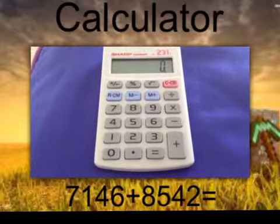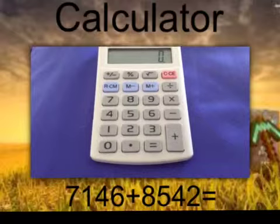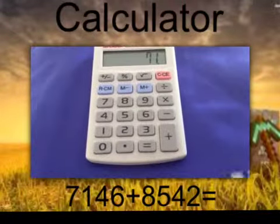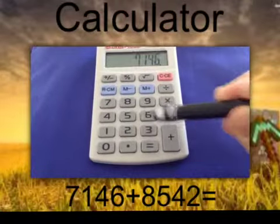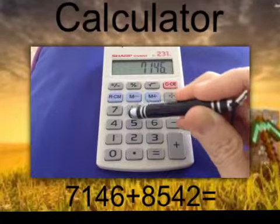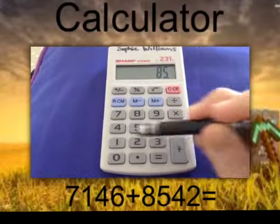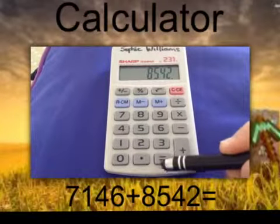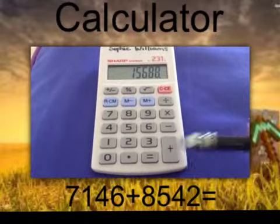Another method that I want to show you how to add numbers together is with using a calculator. With a calculator, I just key in my first number, which is 7,146. And then I hit the plus button just here. Plus 8,542. And then the equals button. And my answer equals 15,688.